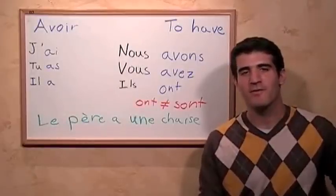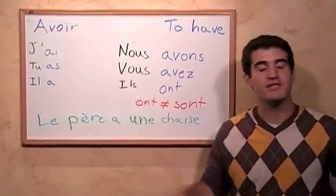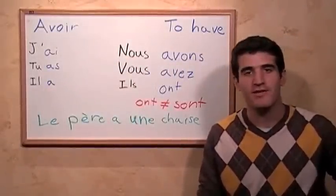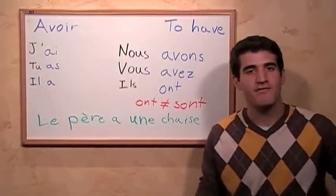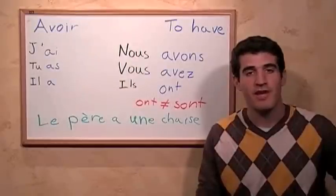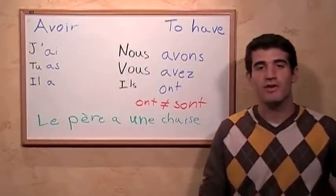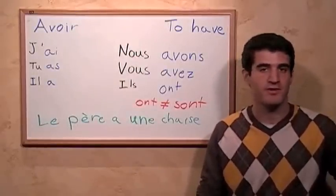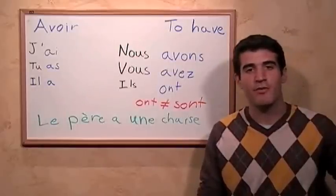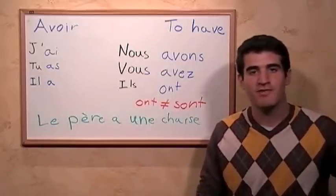We're going to look at another irregular verb, avoir, which means to have. This is irregular because it doesn't fit in the same paradigms that we've been looking at before, like -er and -ir verbs. So each form is different and each form must be learned. But because this verb, like être, is so important, we really have to put some emphasis on this.